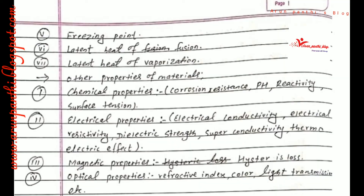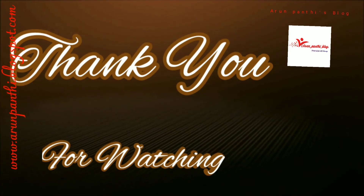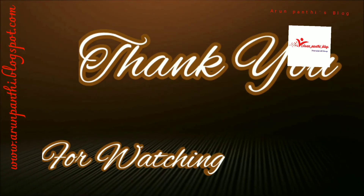Latent heat of vaporization. Other properties of material include: chemical properties such as corrosion resistance, porosity, and reactivity; surface tension; electrical properties such as electrical conductivity, electrical resistance, dielectric exchange, superconductivity, and thermoelectric effect; magnetic properties such as hysteresis loss; and optical properties such as refractive index, color, and light transmission. Thank you for watching. If you like this video, please do like, comment, share, and subscribe. Thank you.